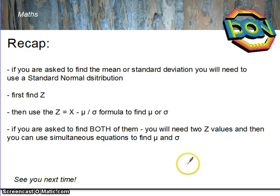So if you're asked to find the mean or standard deviation, you'll have to use a standard normal distribution. First you find your Z values, then use the Z equals X minus μ over σ formula to find μ or σ. And if you're asked to find both of them, you need to find two Z values and then use simultaneous equations to find μ and σ. That's it.